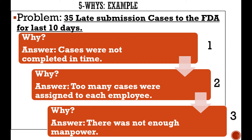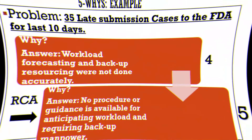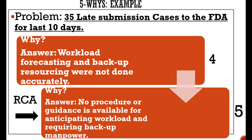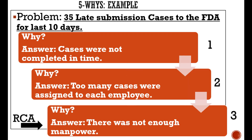Asking why again, you may find there was not enough manpower. Asking why that was, you come to know that workload forecasting and backup resourcing were not done accurately. Upon asking one more why, you realize that there was no procedure or guidance for anticipating workload and acquiring backup manpower. This final cause seems like the root cause as it points to a process issue, and when you do the reverse check, the causality and the sequence both make sense.